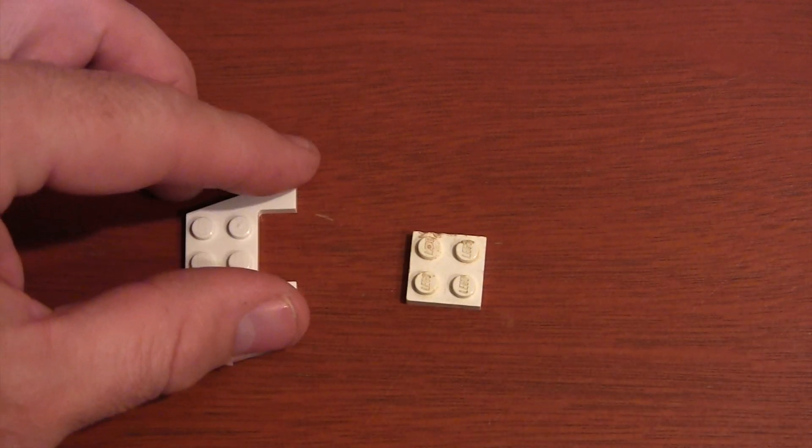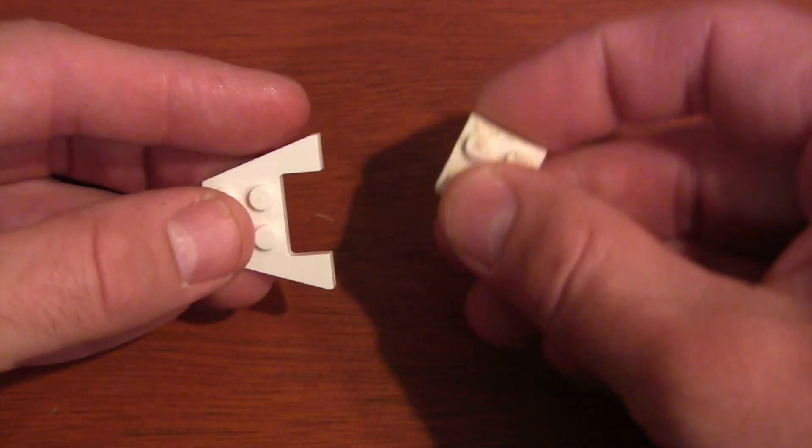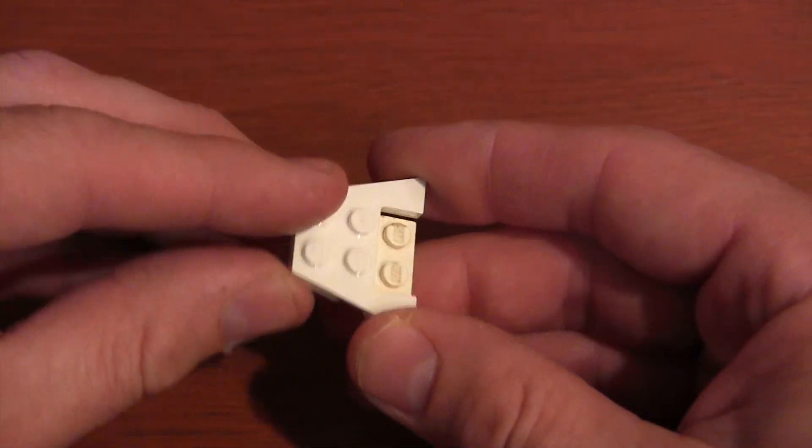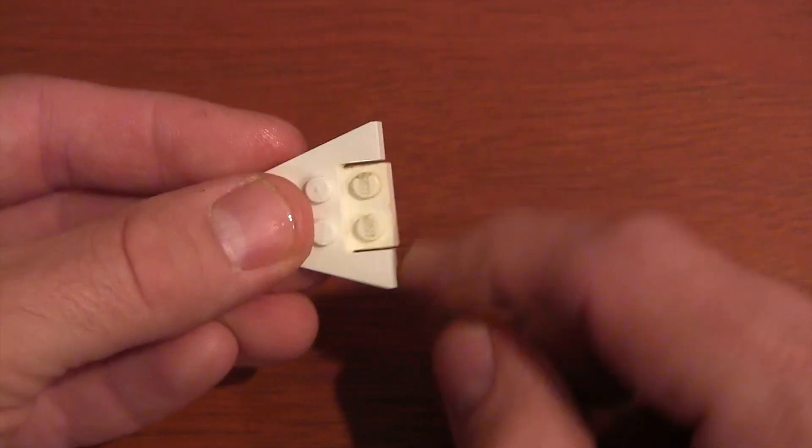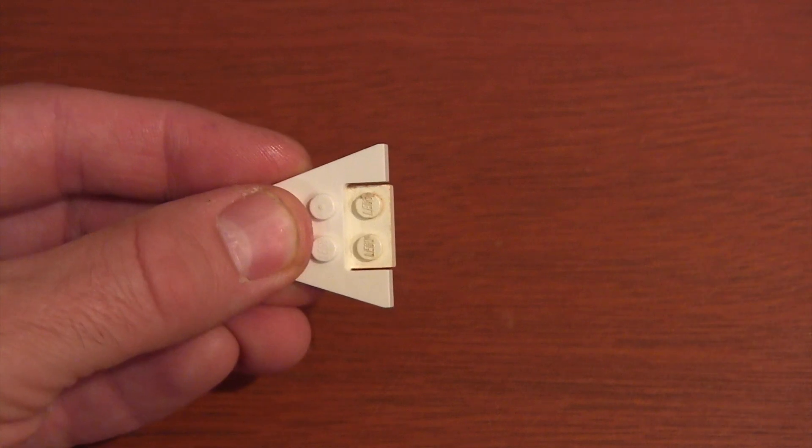The first thing we're going to do is grab our wedge plate and our 2x2 plate and put them together like this. And then that's what it looks like underneath. And here we've got that little overhang from the 2x2 plate.